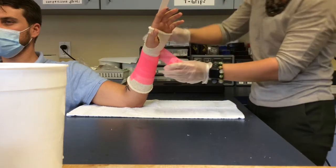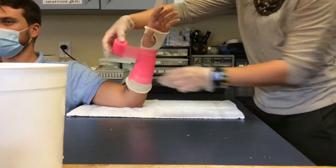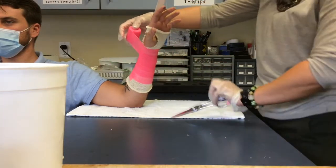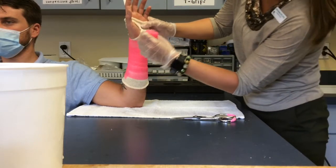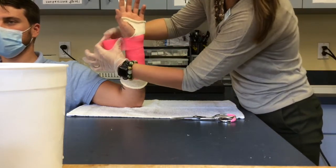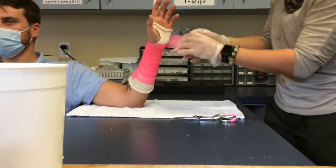Once you get towards the thenar eminence, you will have to cut a strip to go through the web space so the delta cast clears the thumb.